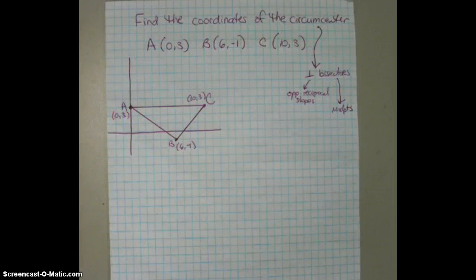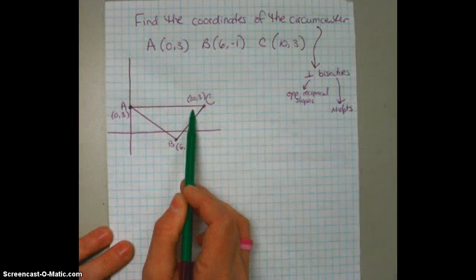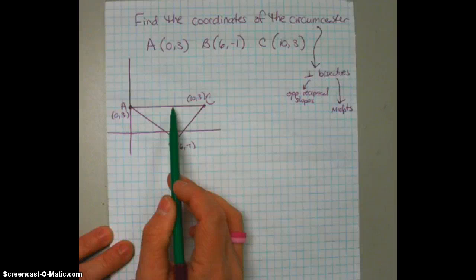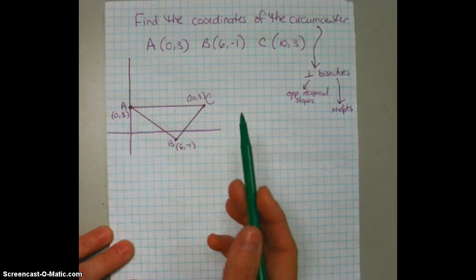So the first side that I'm going to deal with is probably the easiest one, which is that horizontal side, which is AC, segment AC. Now, the perpendicular bisector will be intersecting this segment at its midpoint. That's what bisect means, at its midpoint.